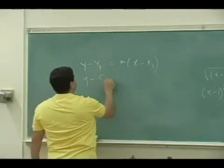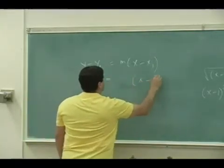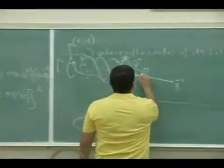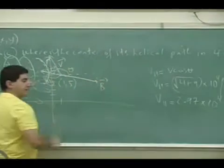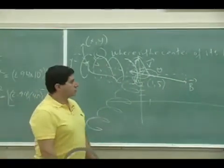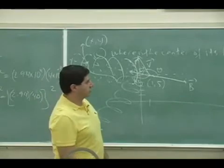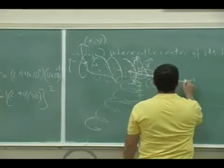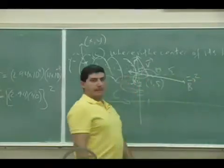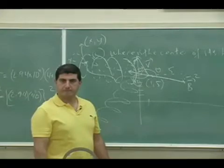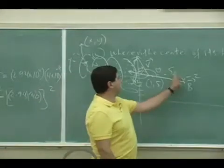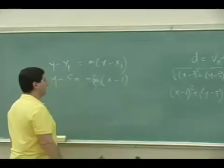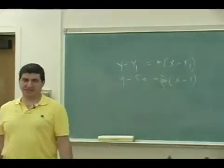So Y minus 5 is equal to X minus 1, and then what's the slope of that line? What's the slope of the B field? The problem gave us that the B field was 5, minus 2. So the slope is minus 2 over 5.